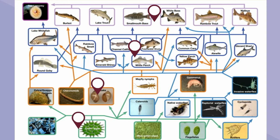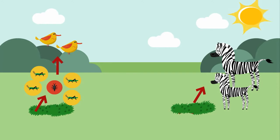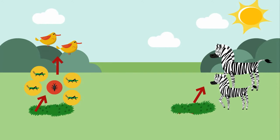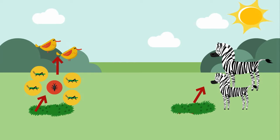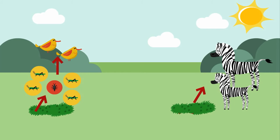When you impact one part of a food web, you impact the entire food web. Take a look at this simple food web. Change is a constant in any ecosystem. A new family of birds has moved into the park.